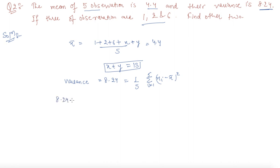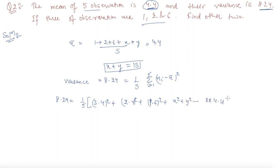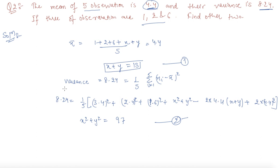I will put the value: 8.24 equals 1 by 5 into the sum of (4.4 minus 1) squared, that is 3.4 squared, plus 2.4 squared, plus 1.6 squared, plus X squared plus Y squared minus 2 into 4.4 times (X plus Y) plus 2 into 4.4 squared. After solving this, X squared plus Y squared comes out to be 97. So now we have two equations. After solving both equations, the value of 2XY comes out to be 72, so XY equals 36.